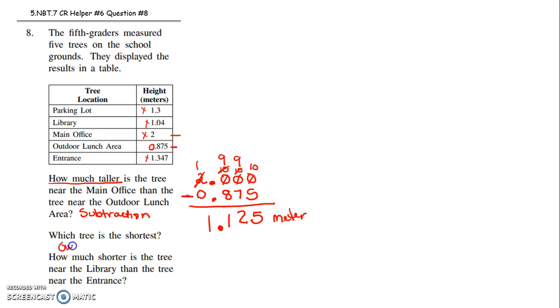So here the 1 with the 0 in the ones place must be the shortest. So the outdoor lunch area has the shortest tree. That was pretty straightforward because it has a 0 in the ones place, so we only had to compare the ones place.